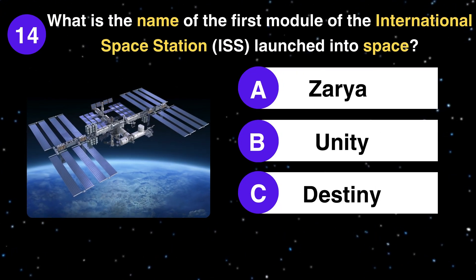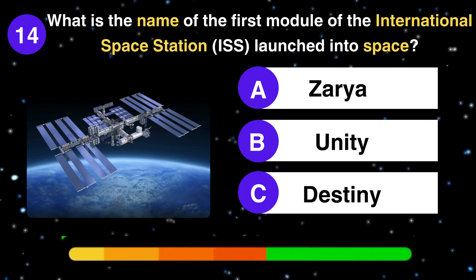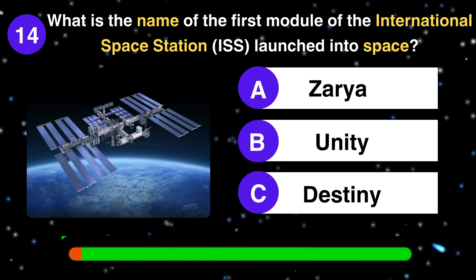What is the name of the first module of the International Space Station, ISS, launched into space? Zarya, Unity, or Destiny? Zarya.